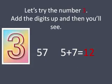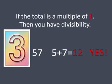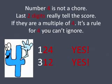Let's try number three. Add the digits up and then you'll see. If the total is a multiple of three, then you have divisibility. Number four is not a chore. Last two digits really tell the score. If they are a multiple of four,